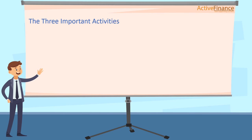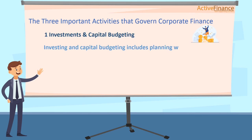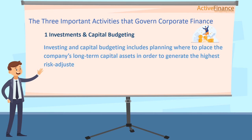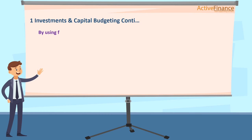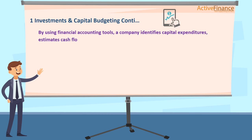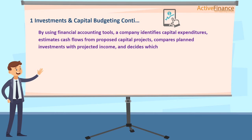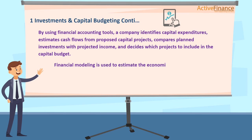The three important activities that govern corporate finance. 1. Investments and Capital Budgeting: Investing and capital budgeting includes planning where to place the company's long-term capital assets in order to generate the highest risk-adjusted returns. This mainly consists of deciding whether or not to pursue an investment opportunity, and is accomplished through extensive financial analysis. By using financial accounting tools, a company identifies capital expenditures, estimates cash flows from proposed capital projects, compares planned investments with projected income, and decides which projects to include in the capital budget.